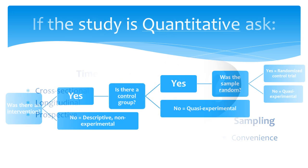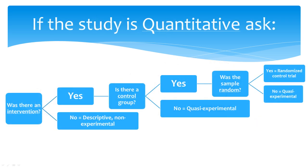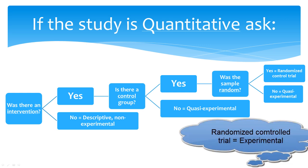To decide how to classify the design of a study you are looking at, follow the steps outlined in this video. Ask yourself the following three questions: Was there an intervention? Is there a control group? Was the sample random? The answers to these questions will tell you how to classify the design of any quantitative study into one of these three categories: descriptive non-experimental, quasi-experimental, or experimental.